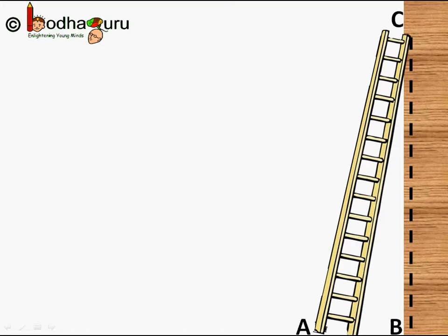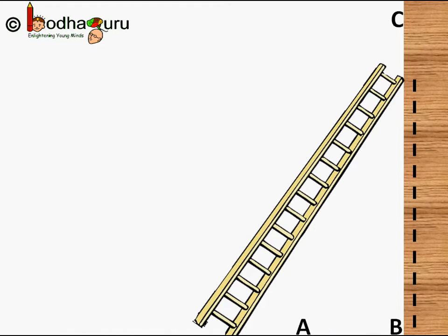Point C is the top of the ladder where it touches the wall. So ABC is a right angle triangle, with the ladder making angle X with the ground.